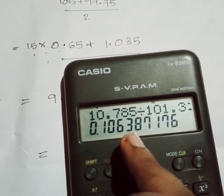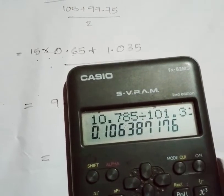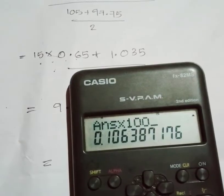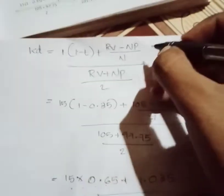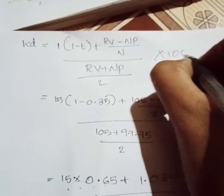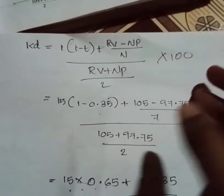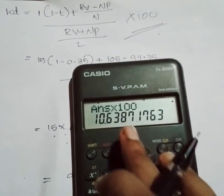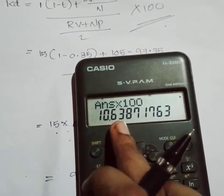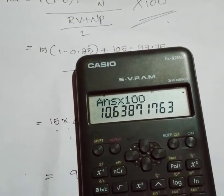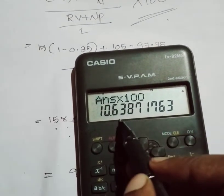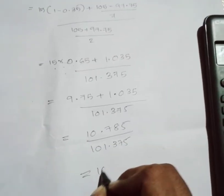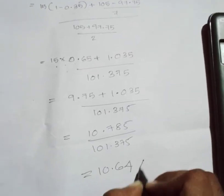10.785 divided by 101.375 gives approximately 0.10638. Multiplying by 100 to express as a percentage, the after-tax cost of the debenture is 10.64%.